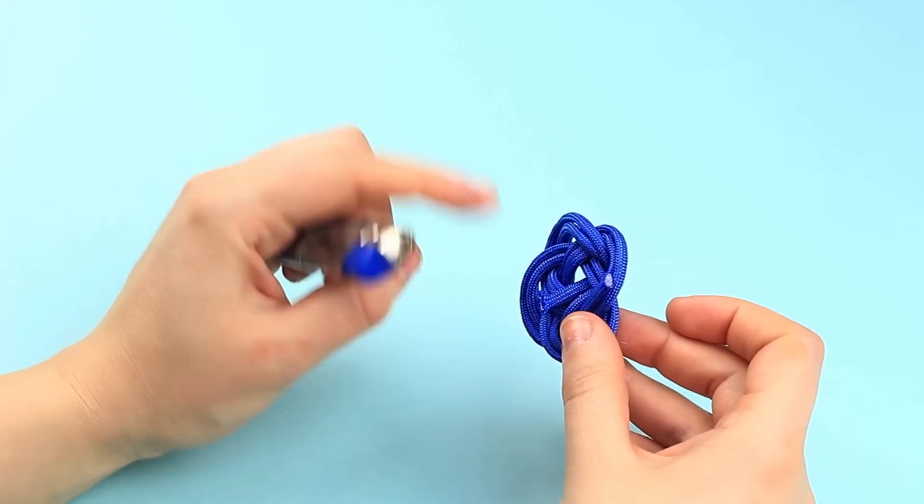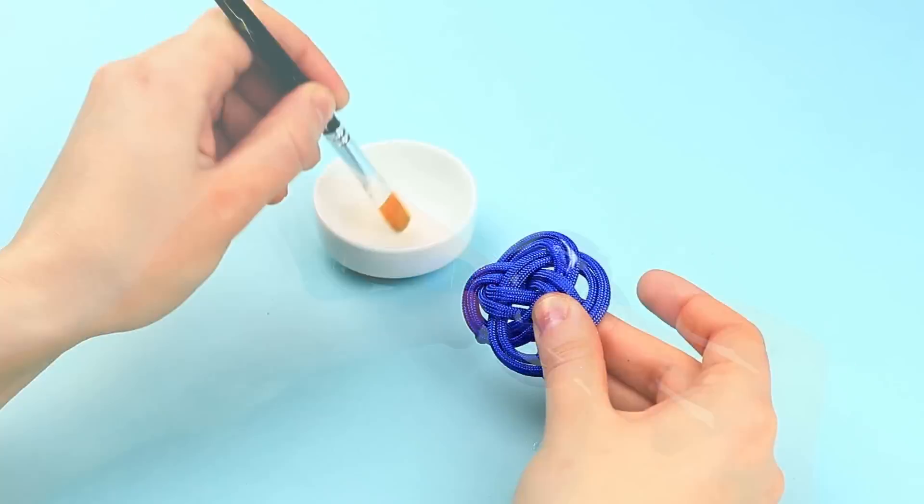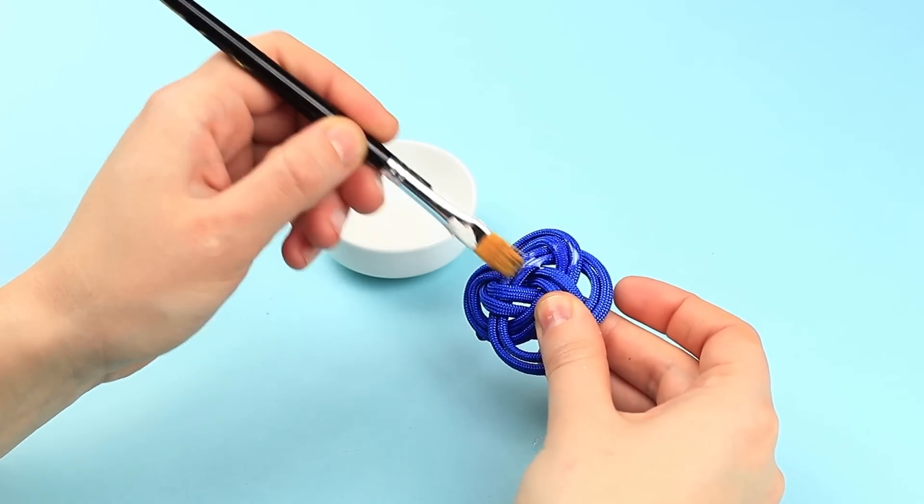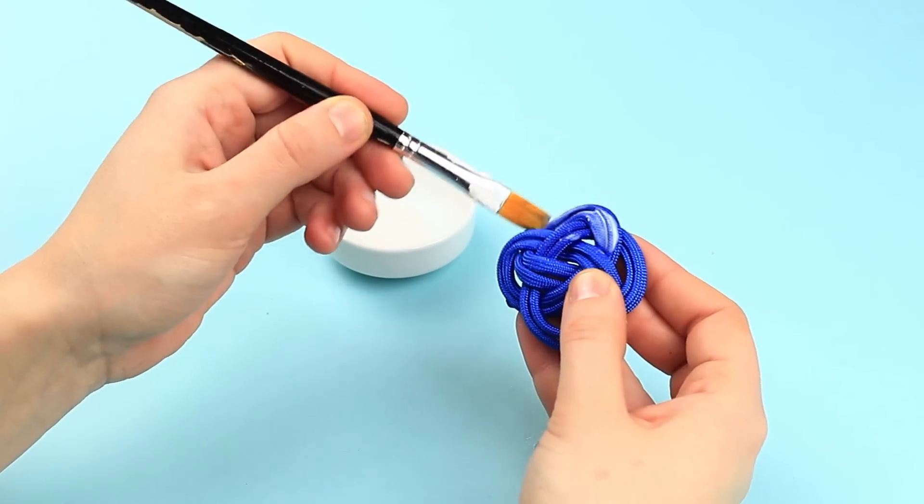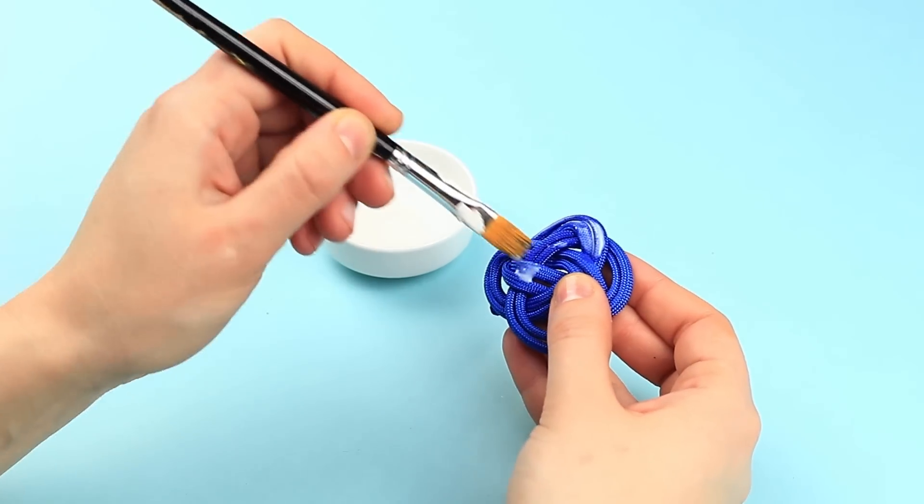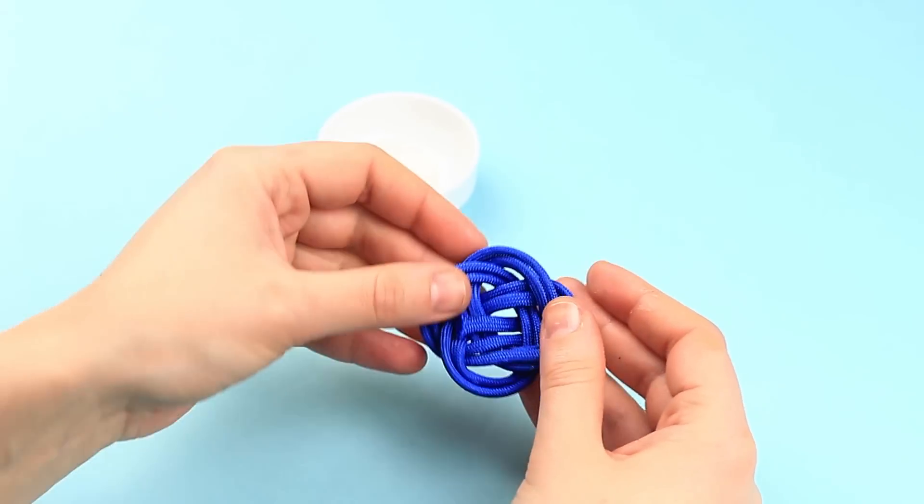Fray check the edges. Cover the Carrick Bend Matte with lacquer. Use a soft brush. After drying, repeat for the other side.